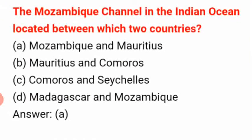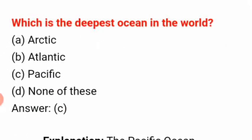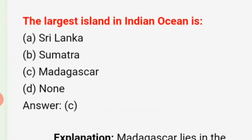The Mozambique Channel in the Indian Ocean is located between which two countries? The answer is A: Mozambique and Mauritius. Which is the deepest ocean in the world? The answer is C: the Pacific Ocean. The largest island in the Indian Ocean is answer C: Madagascar.